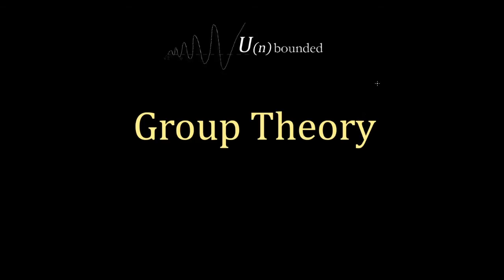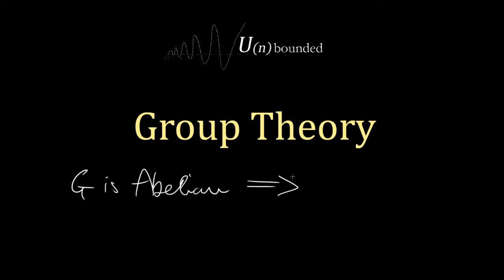Hello everyone, welcome to a new video on group theory. Let's do another problem. The problem I chose today is: prove that if G is abelian, then the inverse of AB is equal to A inverse B inverse, for all A and B in the group.